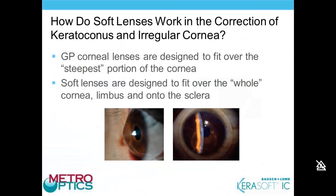Soft lenses are designed to fit over the whole cornea — not just the cornea and limbus, but also resting on the sclera. This allows the lens and its optics to be centered. With GP corneal lenses, the optic zone also houses the fitting curve, which fits over the steepest portion of the cornea. In keratoconus, the apex is often displaced, taking the GP optics with it. Soft contact lenses provide nice central optics and avoid this issue.